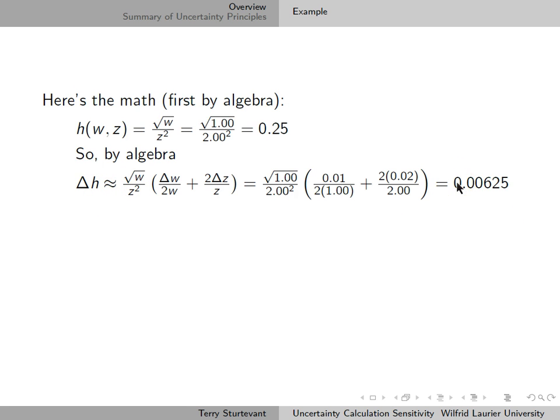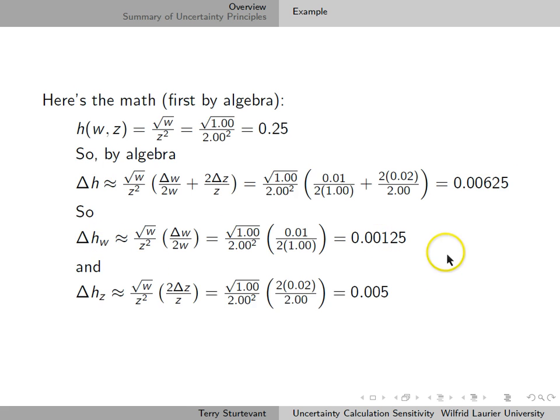The uncertainty delta h is 0.00625. The proportion that is due to w is 0.00125, and the proportion due to z is 0.005.